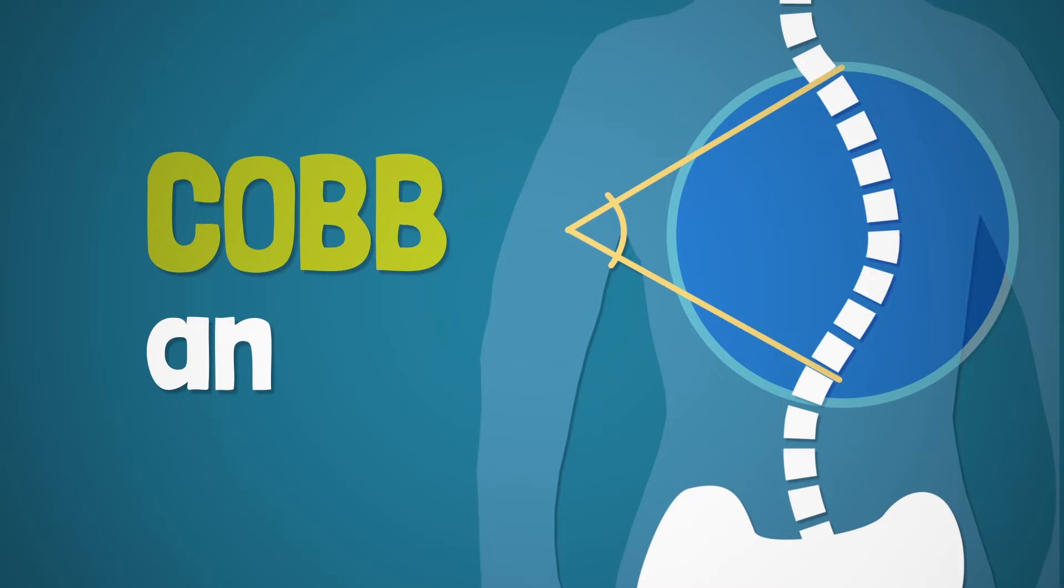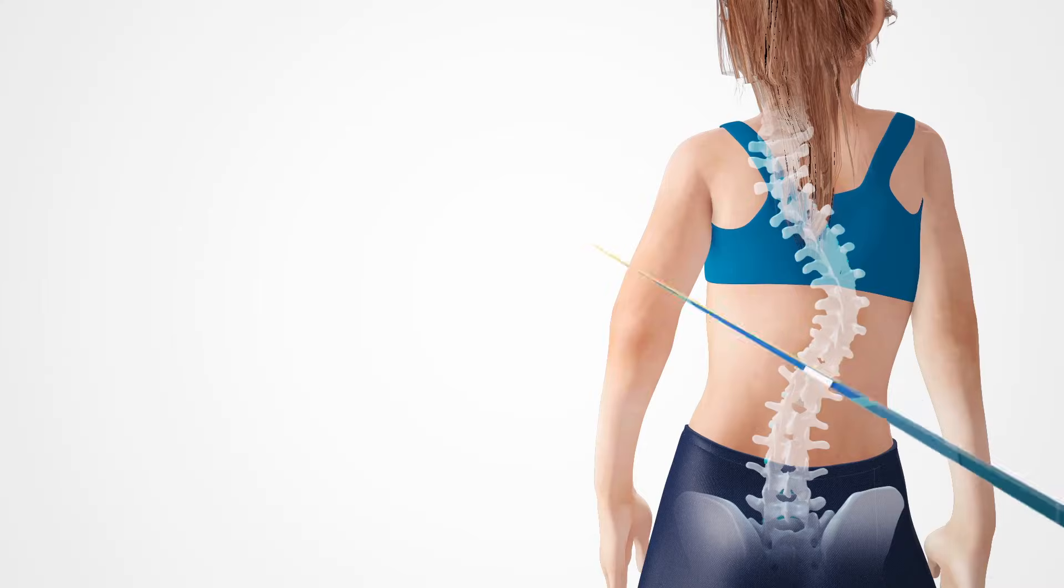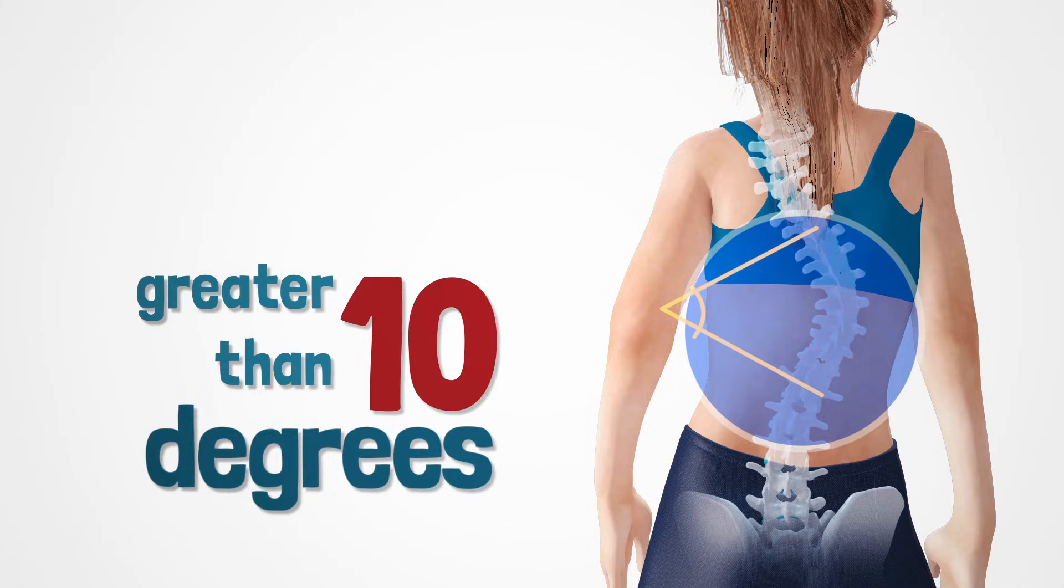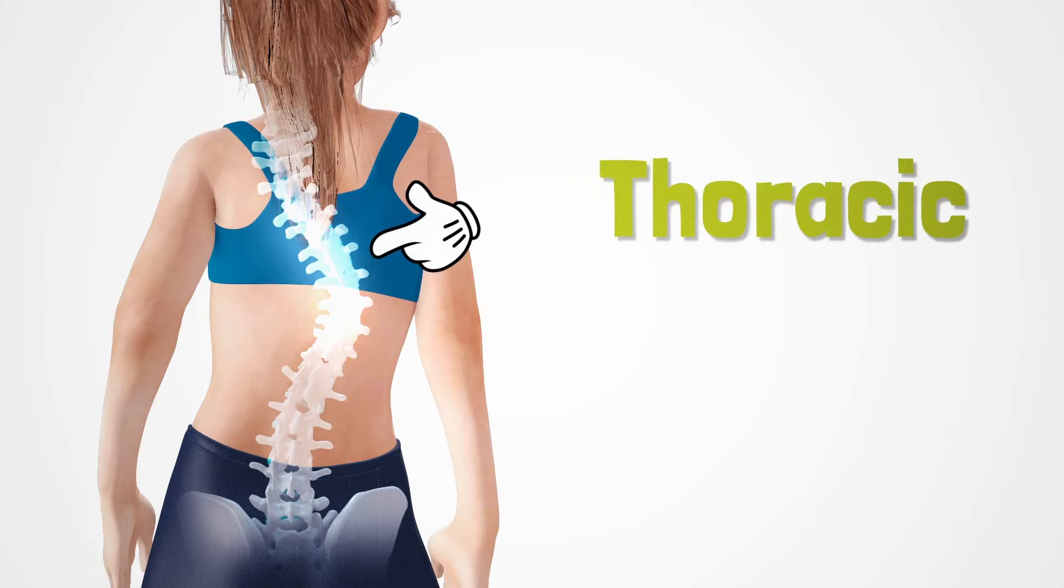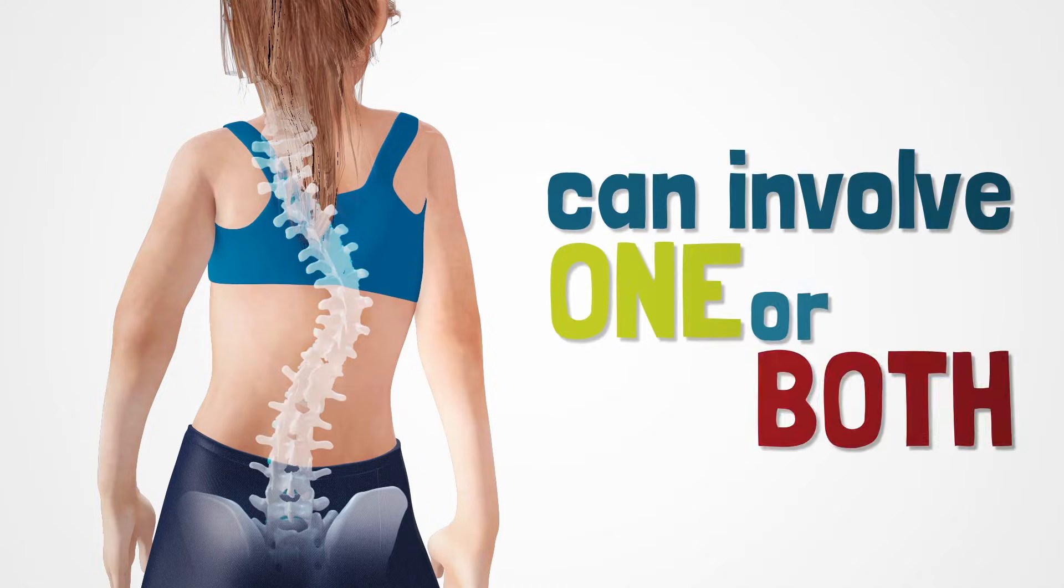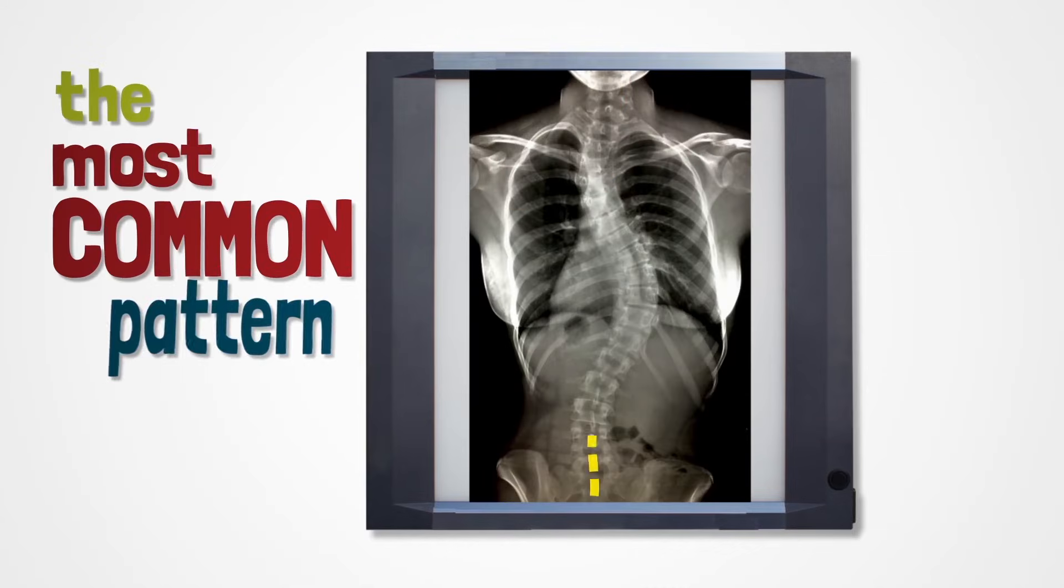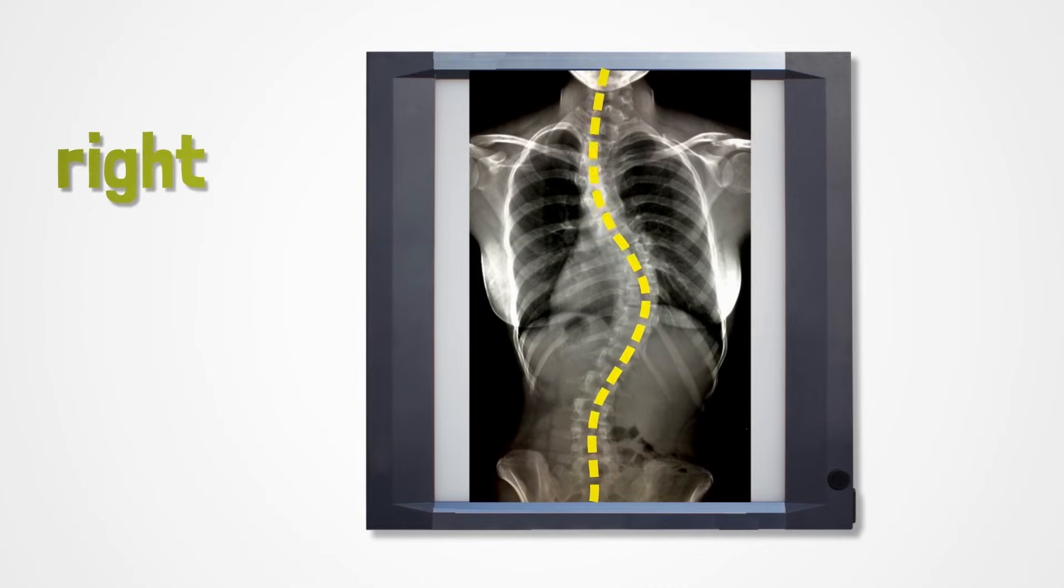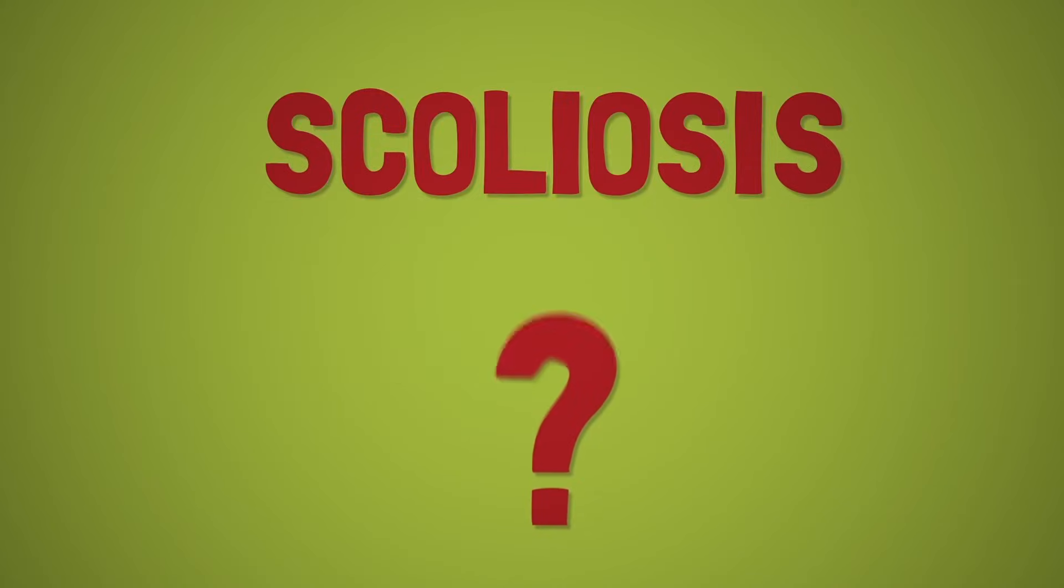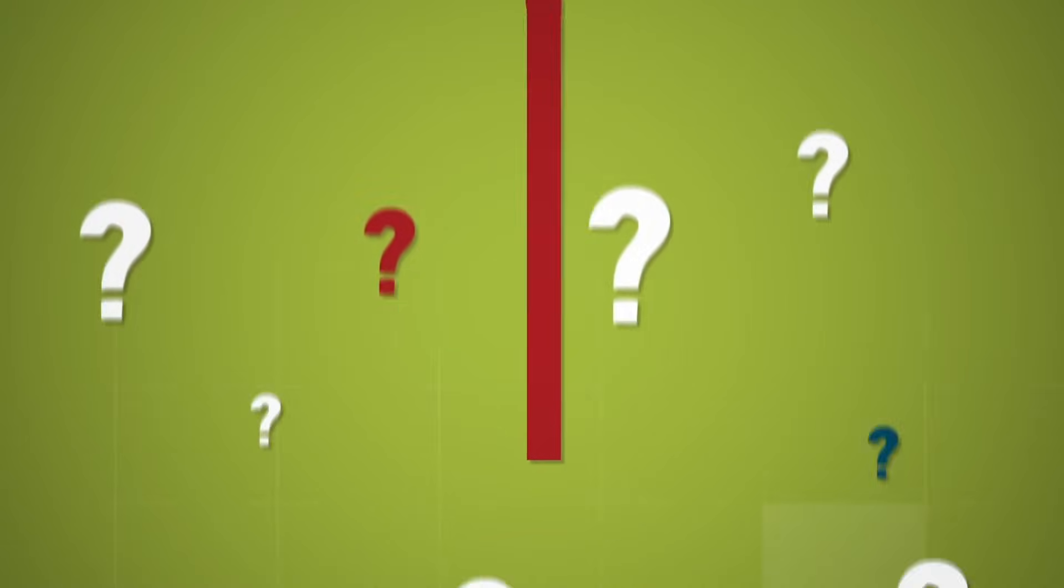Scoliosis is defined as a curve greater than 10 degrees. It is most common in the thoracic and lumbar regions of the spine and can involve one or both of these regions. The most common curve pattern is a right thoracic curve. What causes scoliosis?